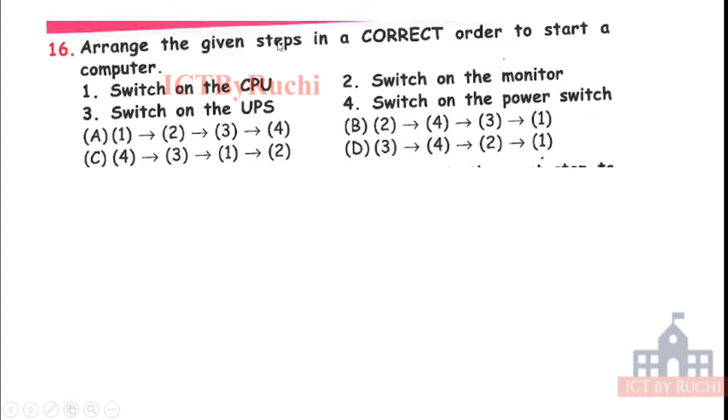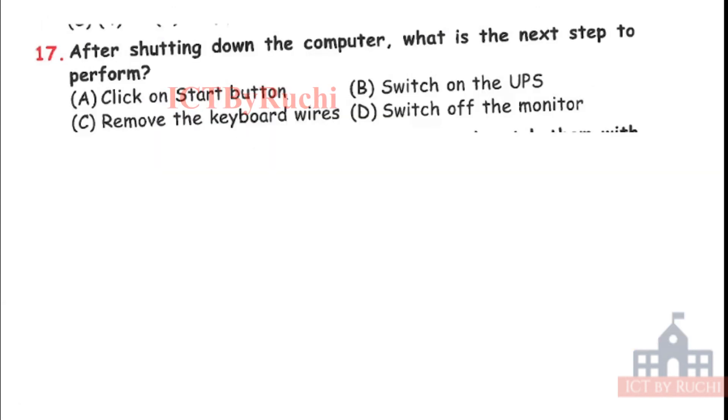Next question. Arrange the given steps in a correct order to start the computer. A. Switch on the CPU, B. Switch on the monitor, 3. Switch on the UPS, or 4. Switch on the power switch. So out of 1, 2, 3, 4 we have to write down the sequence. So what comes first, then next, then next and then the last step. Okay. Tell me the answer first. Answer is C. That is 4, 3, 1, 2. Firstly, we switch on the power switch. Then UPS. Then CPU. And then at the last monitor. Okay.